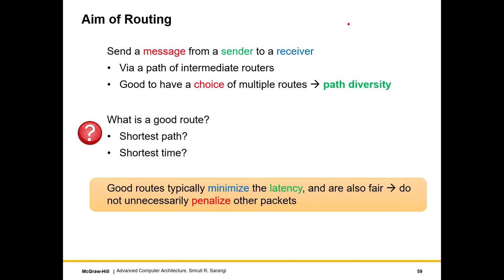The aim of routing is to send a message from a sender to a receiver via a path of intermediate routers. It is always good to have a choice of multiple routes — this is called path diversity. Higher the path diversity, more is the congestion tolerance.